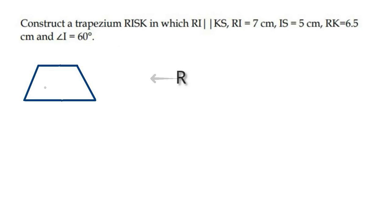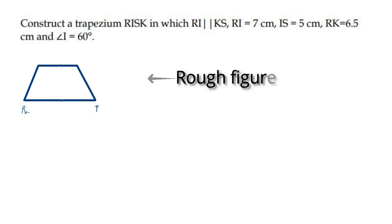Always draw a rough figure before starting with the construction. Let this trapezium be RISK where RI is parallel to KS, RI equal to 7 cm, IS is equal to 5 cm, RK equal to 6.5 cm, and angle I is equal to 60 degrees.